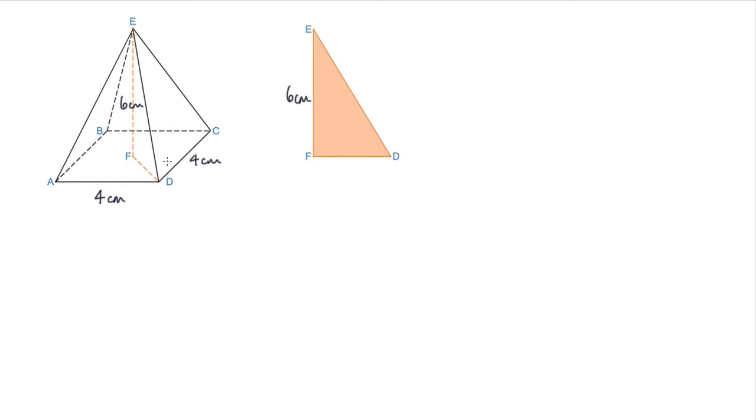Going back to our square-based pyramid, we need to find this length here. We notice that it's actually half of the length of BD. So if we look at the next triangle, which is triangle ABD, and we draw that one separately.